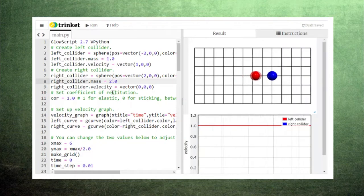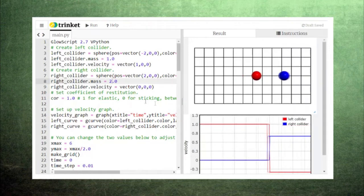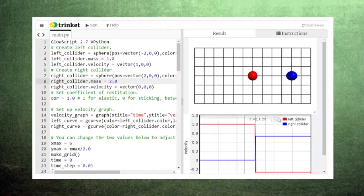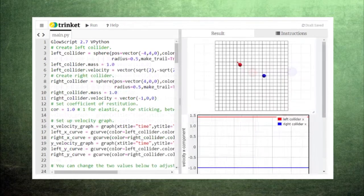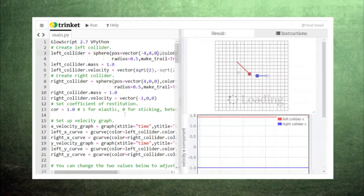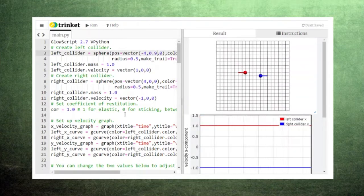The collisions we've examined so far were all head-on collisions, which means that the colliders' velocities all pointed along the x-axis. But what if two colliders approach each other at an angle, or what if an incoming collider doesn't approach head-on but glances off the target?